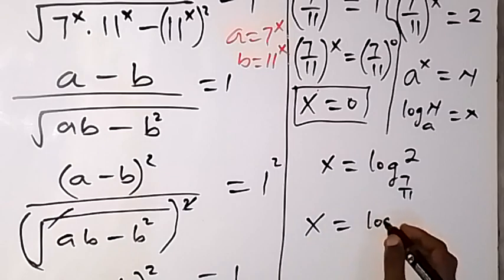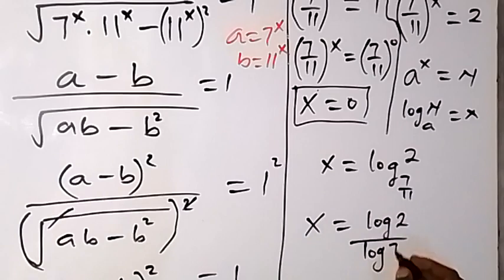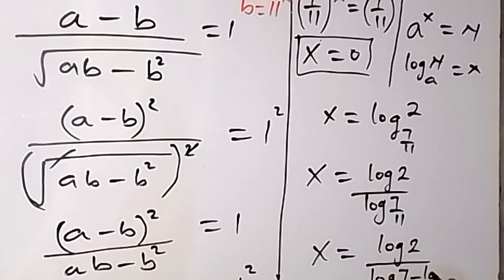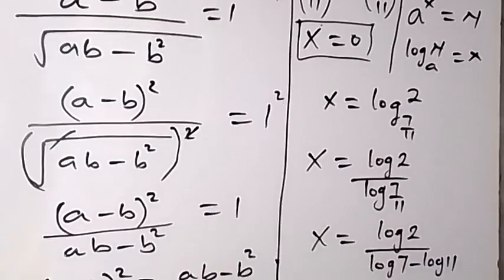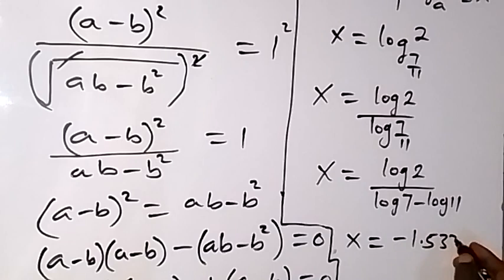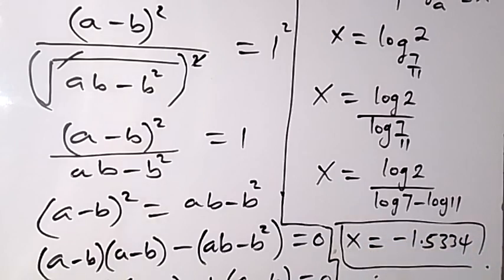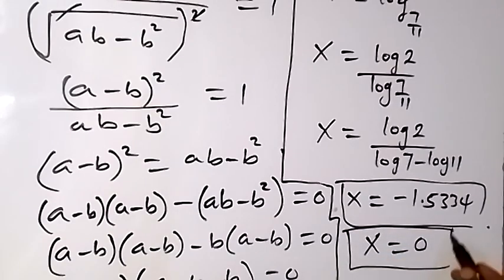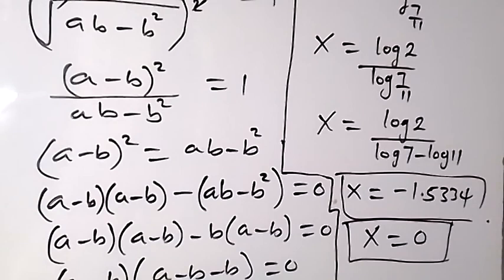Using the change of base formula, x equals log 2 over log of 7 over 11, which we can separate using the law of logarithms as x equals log 2 divided by log 7 minus log 11. Using a calculator to solve this, we get an approximate value of x equals negative 1.5334. So we have two values of x: x equals 0 and x equals negative 1.5334. We have come to the end of the class; thank you for watching. Don't forget to subscribe and turn the notification bell on for more videos.